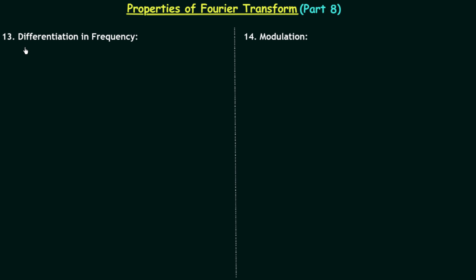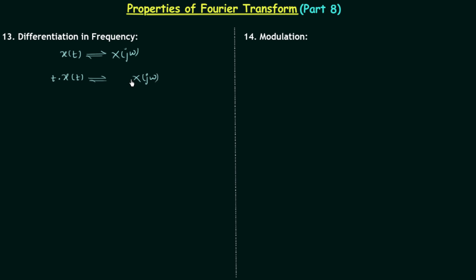Let's start our discussion with the differentiation in frequency property of Fourier transform. I will first give you the property and then we will prove it. If a time domain signal x(t) has the Fourier transform X(jω), and we multiply t to this time domain signal, the Fourier transform will get differentiated with respect to ω one time and that differentiation will be multiplied by j.